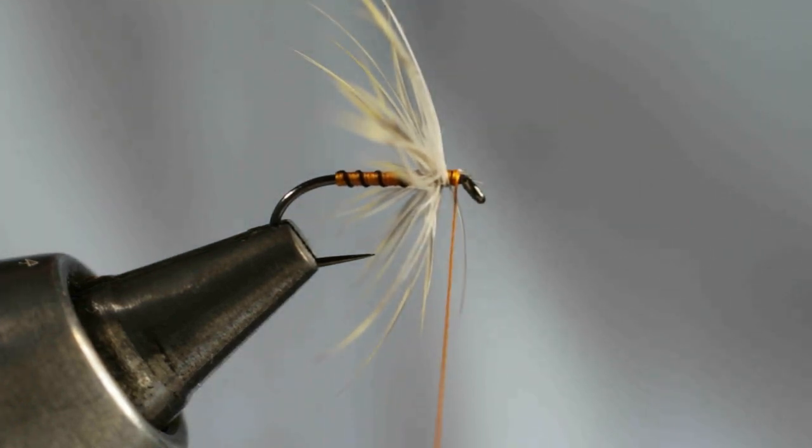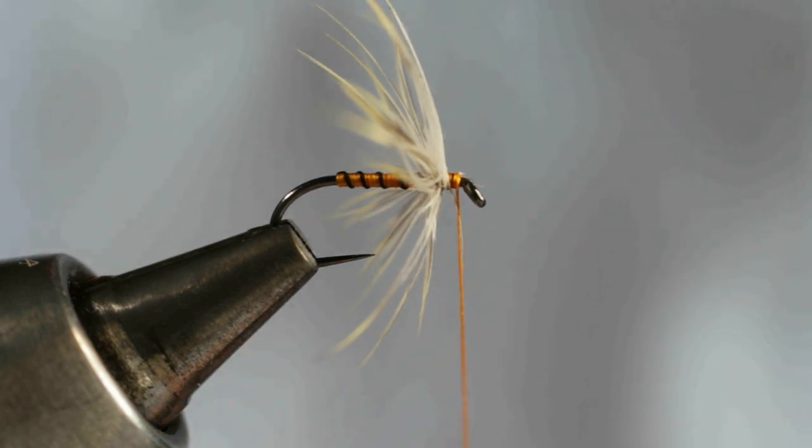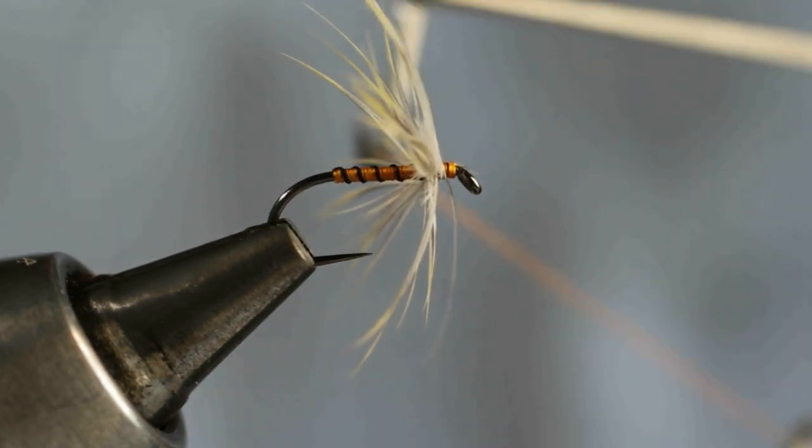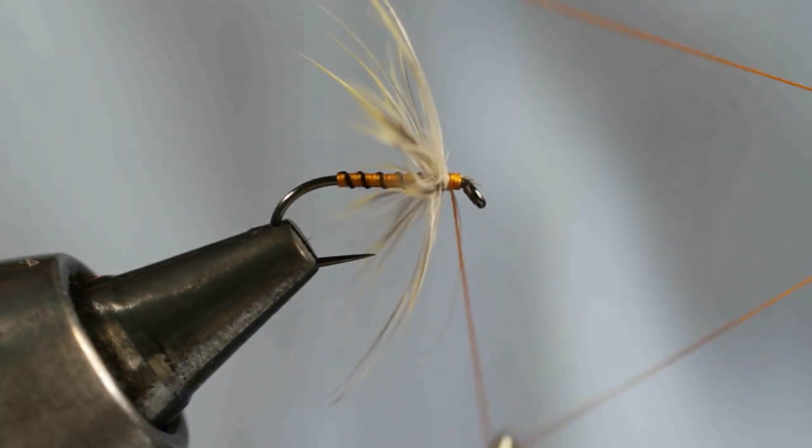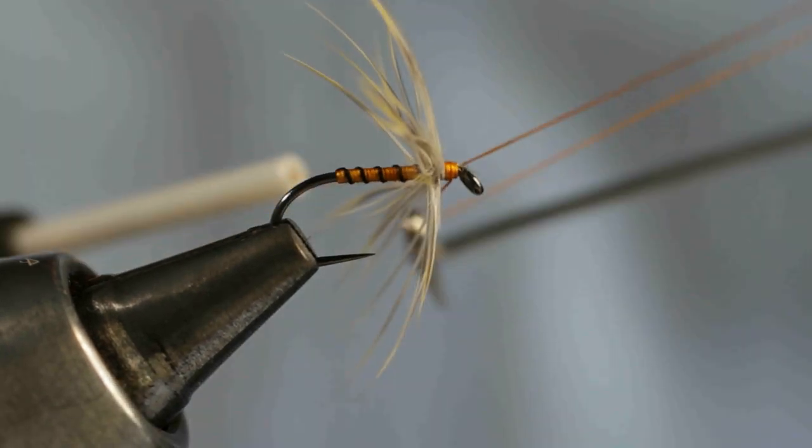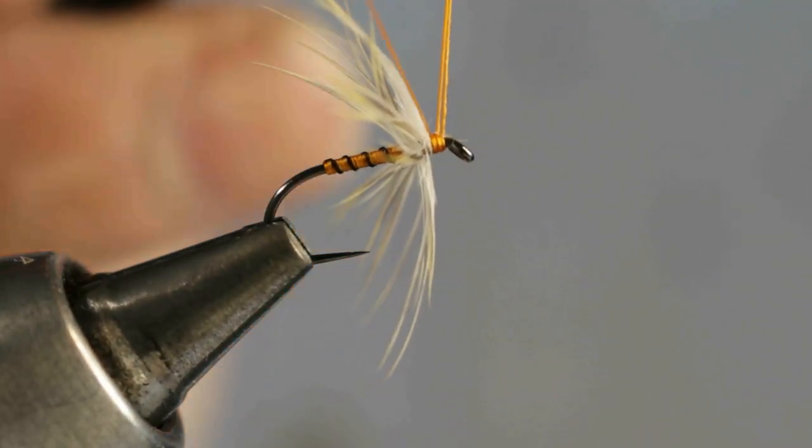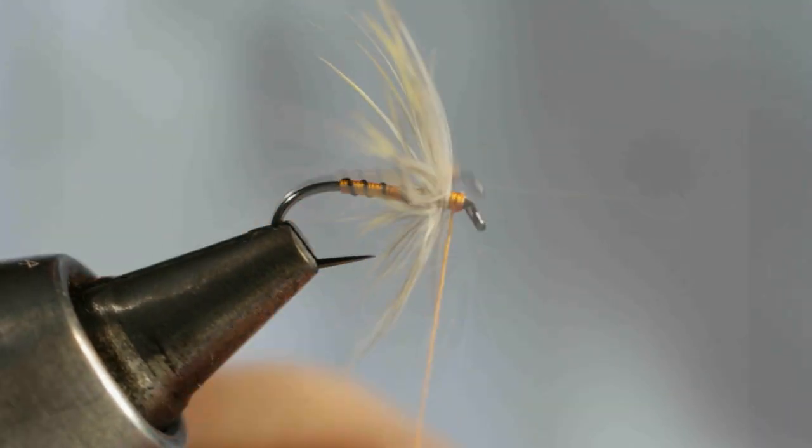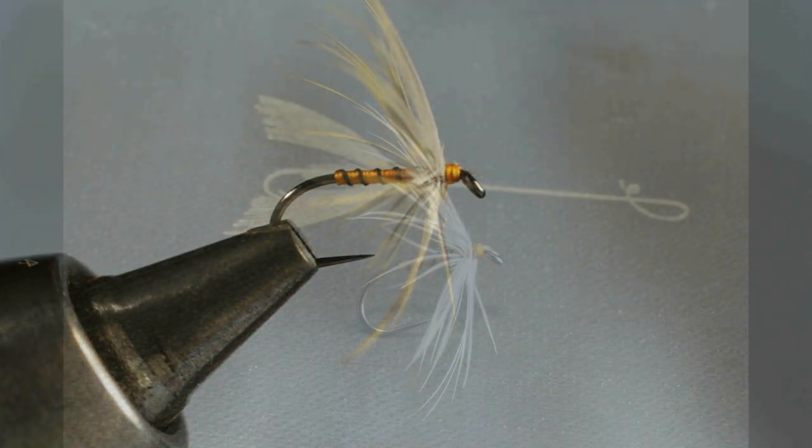Once you're happy with that bind it down with two wraps of silk. Come in with your whip finish tool and take three nice firm wraps for a whip finish. You don't want to take too many turns. You want a nice small head to the fly.